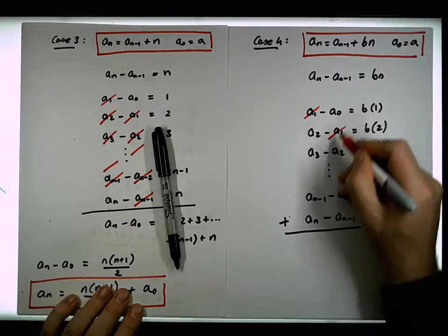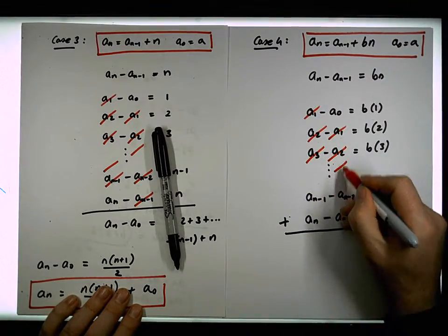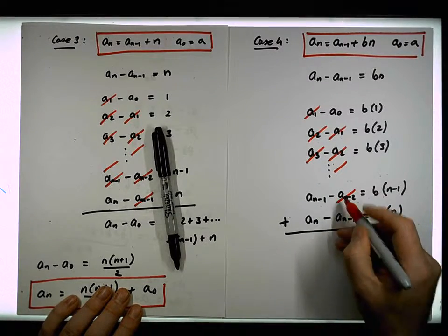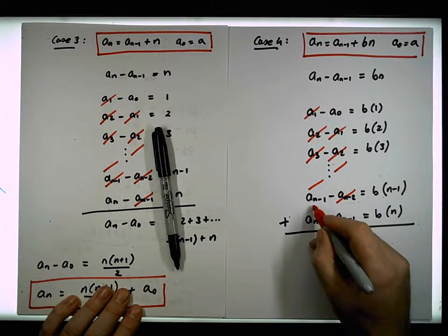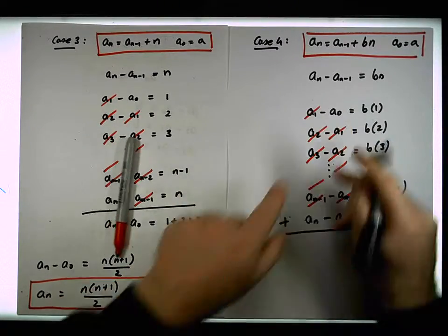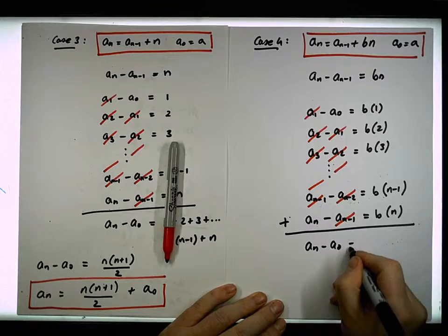You can see that the a1 cancels with the minus a1, the a2 cancels with the minus a2, the a3 cancels with the one after. The minus an minus 2 would cancel with the one that precedes it, the an minus 1 cancels with the minus an minus 1. What do we end up with here? The only things that are left is, once again, an minus a0 must be equal to all of these things.